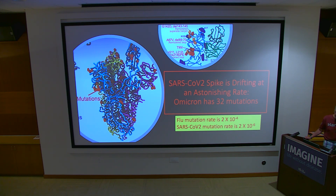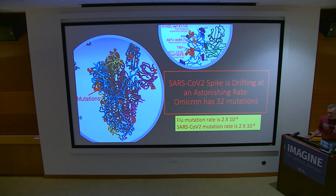SARS-CoV-2 came along, and Omicron has 32 amino acid substitutions probably affecting antigenicity. The coronavirus polymerase is something like 100-fold more accurate than the flu polymerase because it has an error correction domain. So we all thought drift wouldn't be an issue. Omicron alone is worth 30 years of flu.